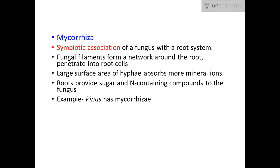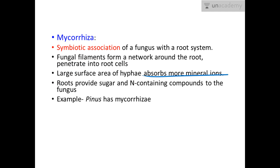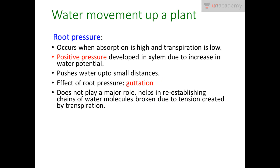There are some special structures associated with water and mineral nutrient absorption in some plants. One such structure involves fungi — the symbiotic association of fungus with the root system is known as mycorrhiza. Fungal filaments form a network around the root and penetrate into root cells. Their very large surface area helps absorb more mineral ions and water. In return, mycorrhiza gets sugar and nitrogen-containing compounds from the roots. An example is the Pinus tree, a gymnosperm that has mycorrhiza.